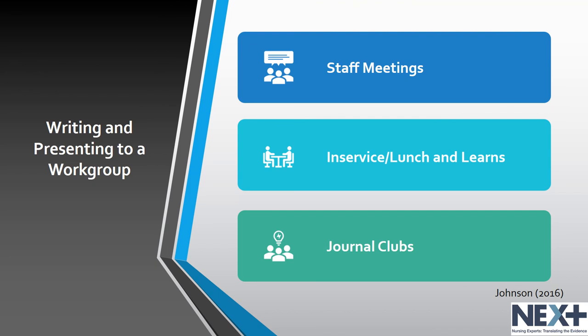Journal clubs improve presentation, writing, and communication skills and support magnet designation. Challenges can include staff time and attendance, article selection, lack of interest and motivation, lack of administrative support, and fear in sharing personal views regarding article content. Members should rotate presenters of content to assure full participation and engagement of all involved.